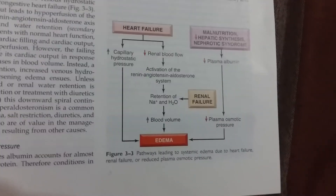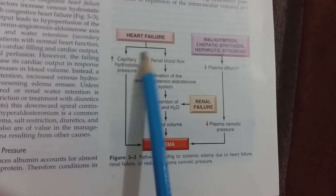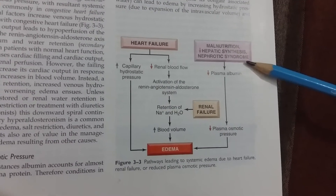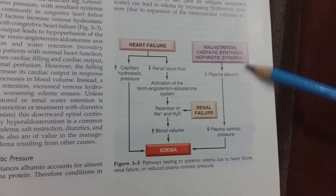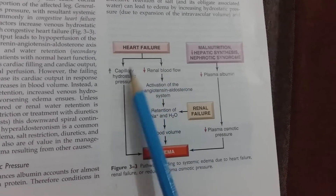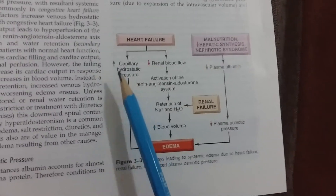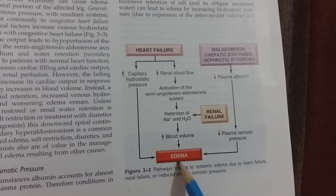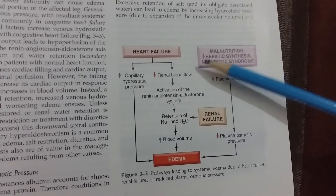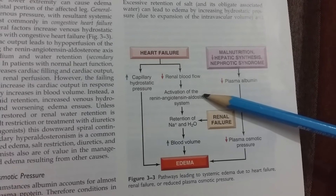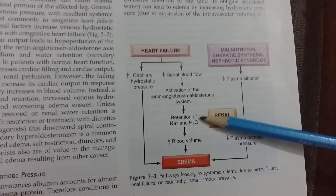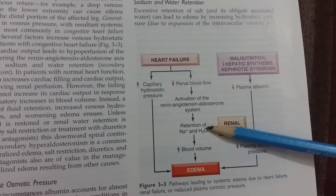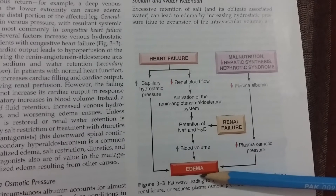This is the pathway that leads to systemic edema. Systemic edema can result from heart failure, renal failure, malnutrition, decreased hepatic synthesis, or nephrotic syndrome. In heart failure, there are two conditions: first, hydrostatic pressure increases, causing fluid to accumulate into the space and leading to edema. Second, decreased renal flow activates the renin-angiotensin system, which induces sodium and water retention. Due to sodium and water retention, hydrostatic pressure increases and osmotic pressure decreases, blood volume increases, and edema results.